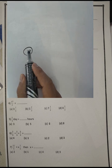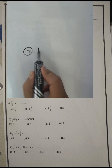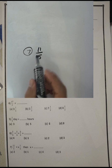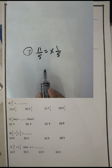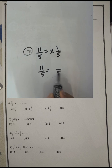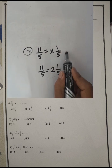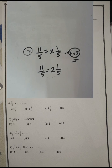Question seven: eleven divided by five equals x and one over five. We convert from improper fraction to mixed number. Two times five equals ten with remainder one. Then the value of x is two.